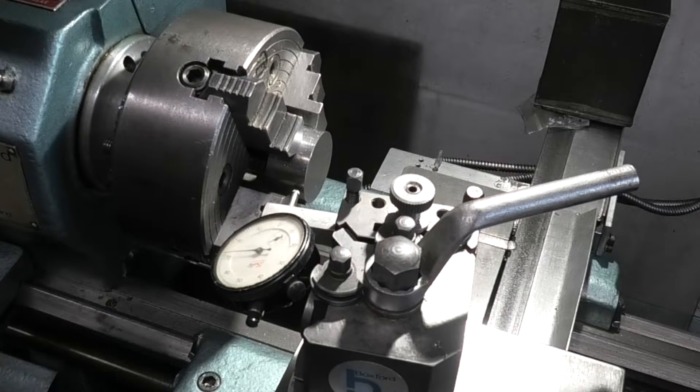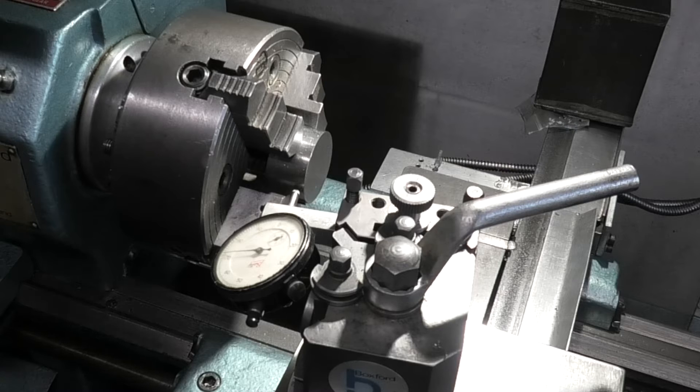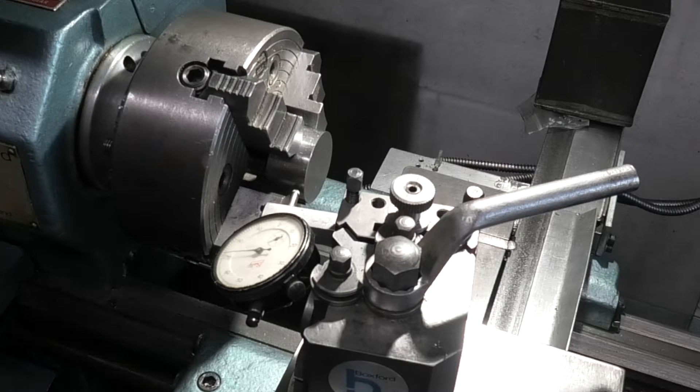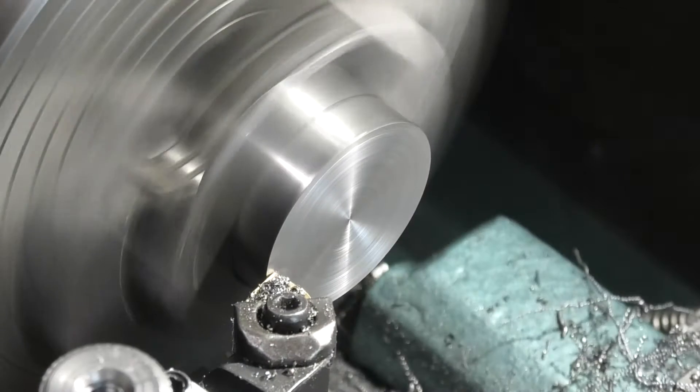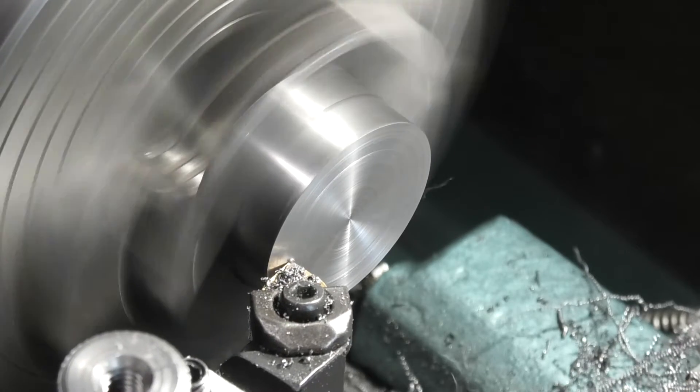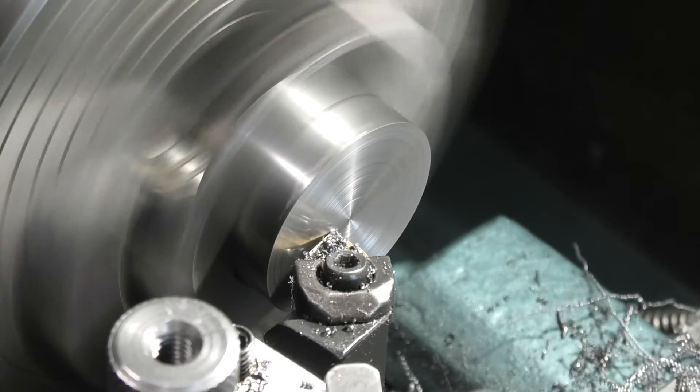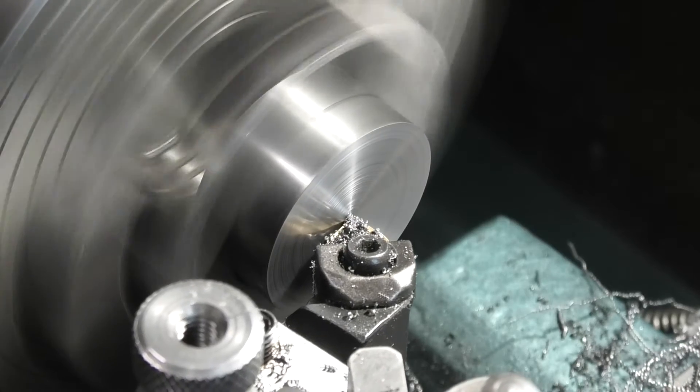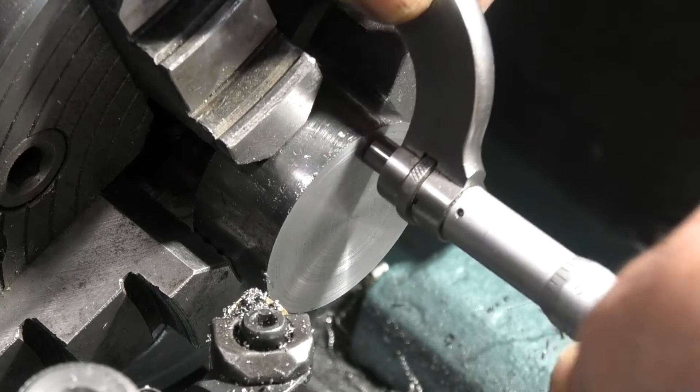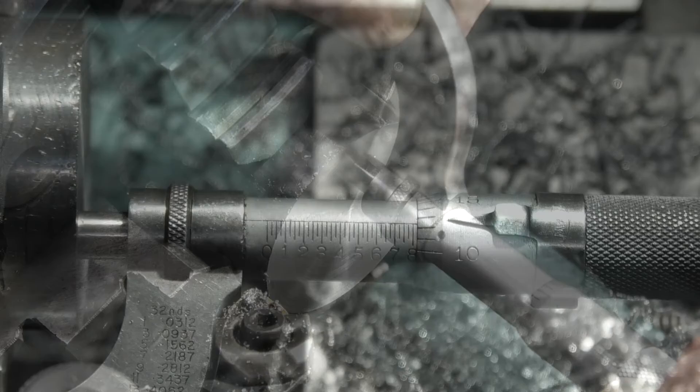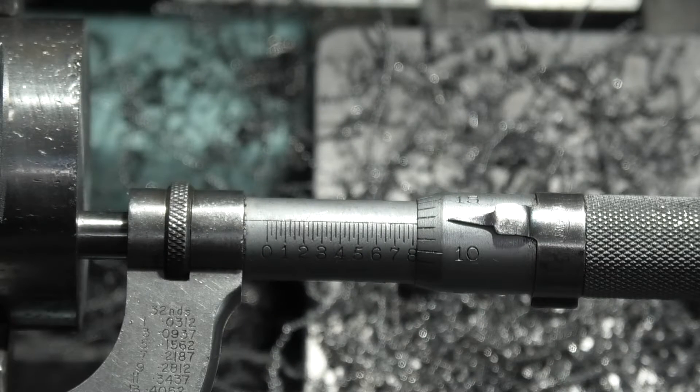The first step is to hold the blank in the four jaw chuck and face all the blanks off on one end. Place the blank to the clutch cone in the chuck leaving a gap at the back so you can get a micrometer or the caliper in to measure the width. I can just get a micrometer down the back, eight twelve and a half.